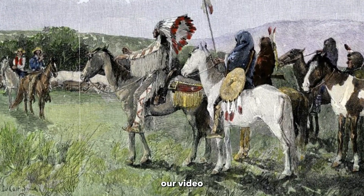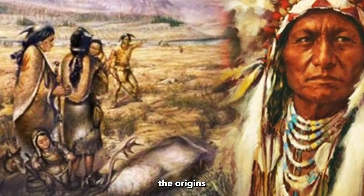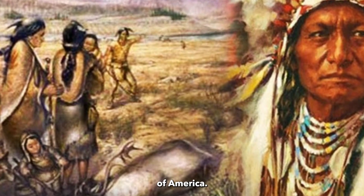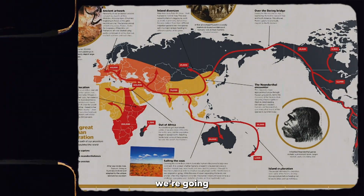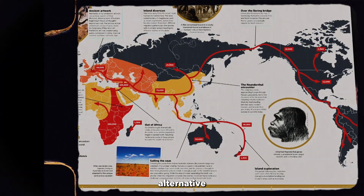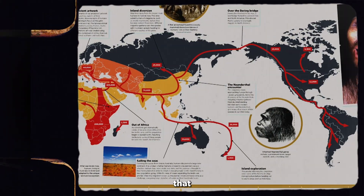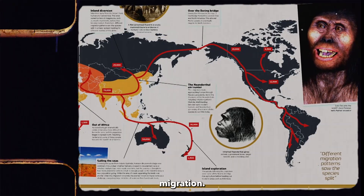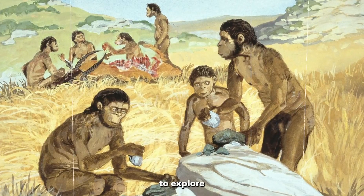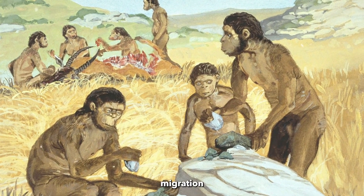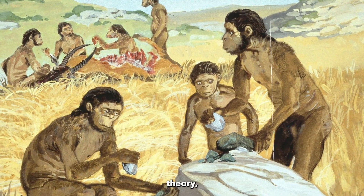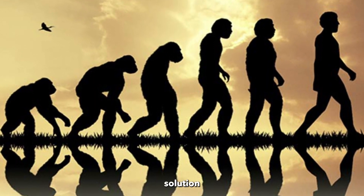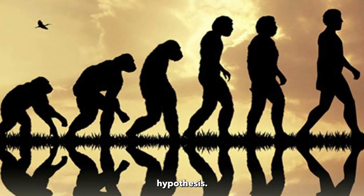Welcome back to part two of our video series on the origins of the indigenous peoples of America. In this episode, we're going to delve into alternative theories that challenge traditional views on human migration. Get ready to explore the mysteries surrounding the coastal migration theory, the pre-Clovis hypothesis, and the controversial Solutrean hypothesis.